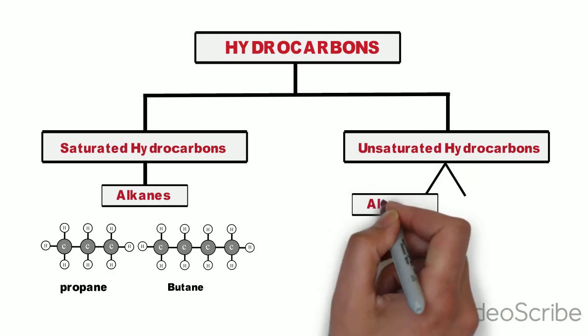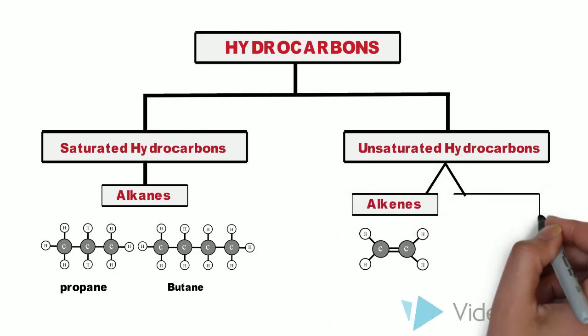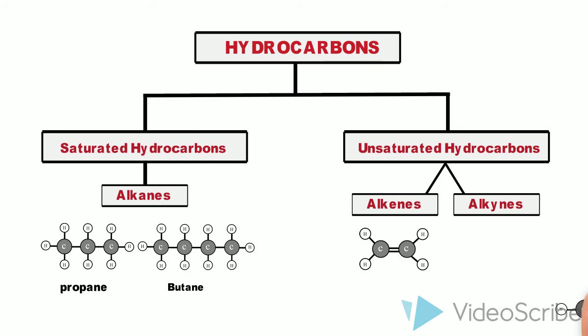Unsaturated hydrocarbons, like alkenes and alkynes, have double and triple bonds between neighbouring carbon atoms. For example, ethene and ethine.